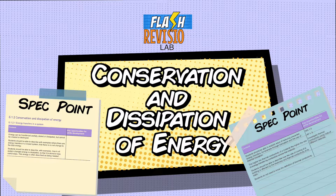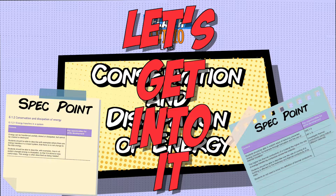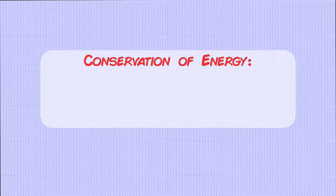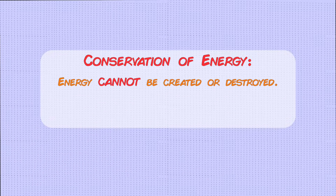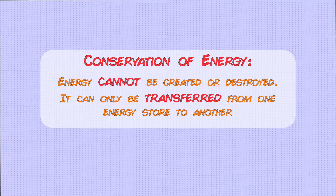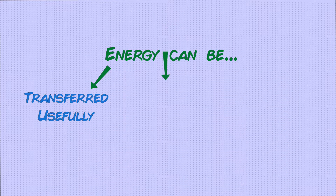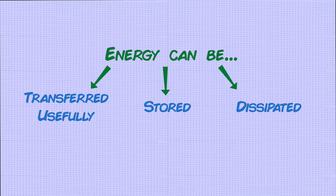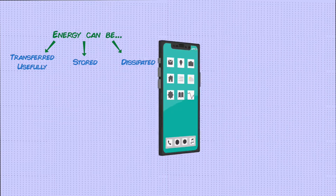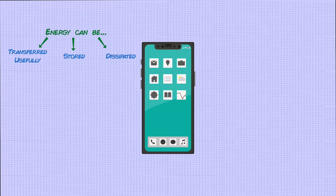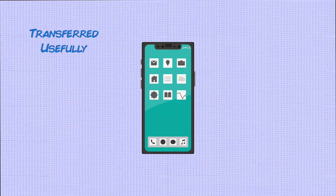The conservation of energy tells us that energy can't be created or destroyed — it can only be transferred between energy stores. This transfer could be a useful transfer, a storage of energy, or the dissipation of energy. To explain all three of these we can use a phone as an example.